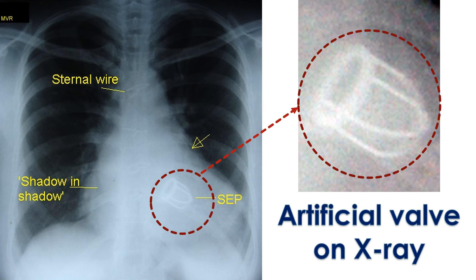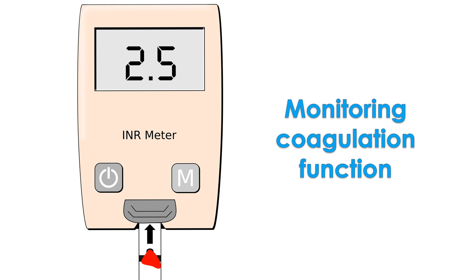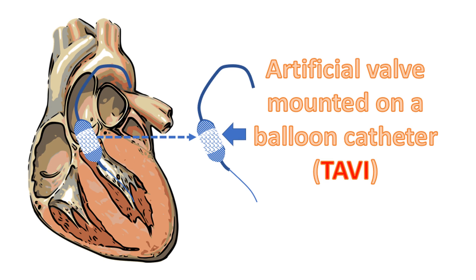Heart valves with severe regurgitation are usually repaired by open surgery or more often replaced, because valves damaged by rheumatic fever are seldom suitable for repair. If a mechanical heart valve is placed, regular long-term anticoagulation is needed to prevent thromboembolic complications and valve thrombosis, and regular monitoring of coagulation function is needed to prevent bleeding and check effectiveness. Though new procedures like transcatheter aortic valve implantation (TAVI) have come up recently, they are not yet suitable for rheumatic heart disease. The damage and distortion in valve structure often make these procedures unsuitable. Moreover, being new technologies, they are very costly and beyond the reach of patients with rheumatic heart disease, who are located mostly in underprivileged regions of the world.